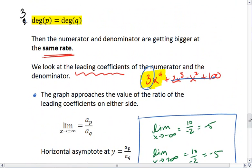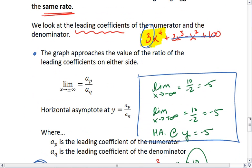That's what happens when we have equal degrees in the numerator and the denominator. We must look at the ratio of the leading coefficients.